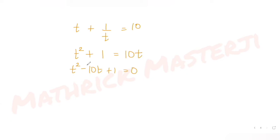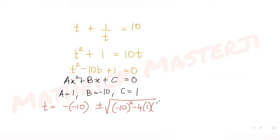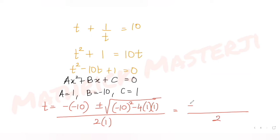Comparing with ax² + bx + c = 0, we get a = 1, b = −10, c = 1. Using the quadratic formula: t = (−b ± √(b²−4ac)) / 2a = (10 ± √(100 − 4)) / 2 = (10 ± √96) / 2.